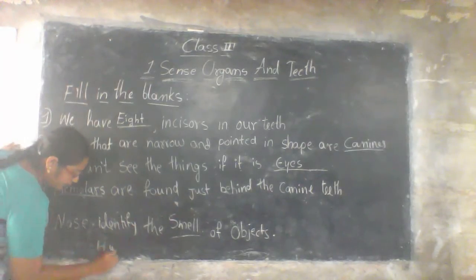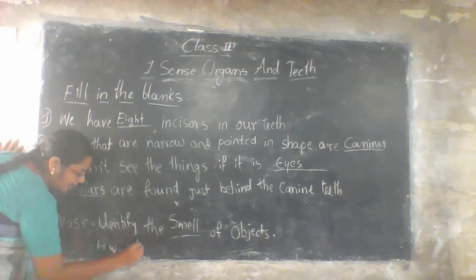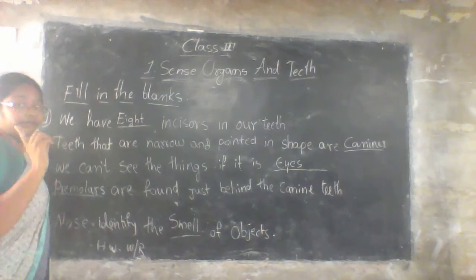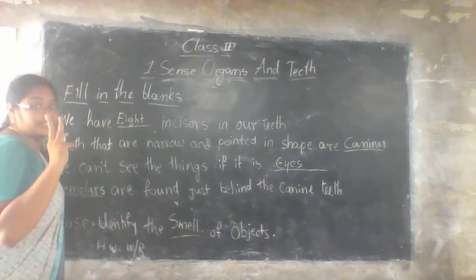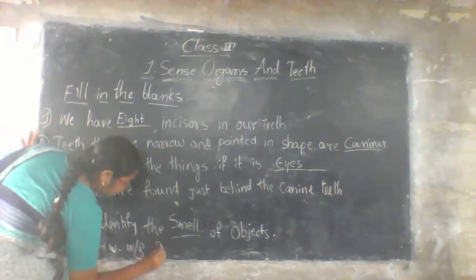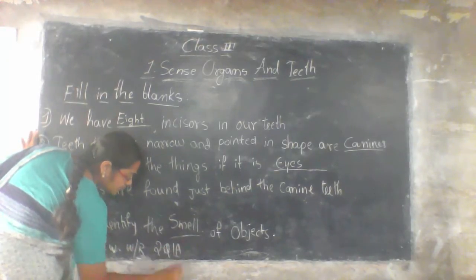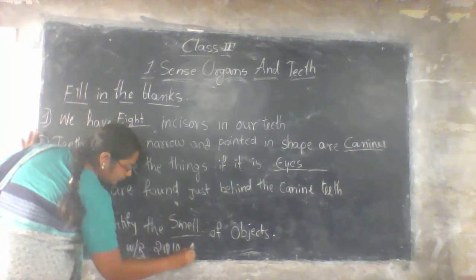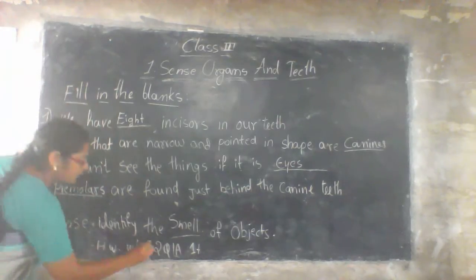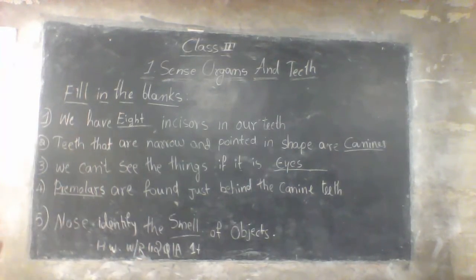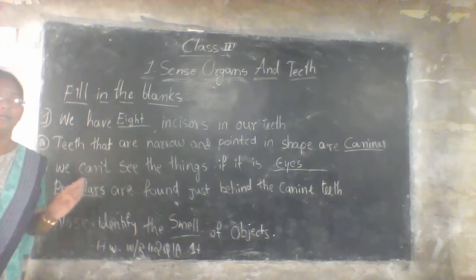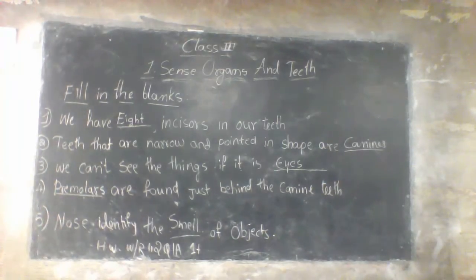For homework, I will give you read and write. Write the first two question and answers — two questions, one time each. We have already written four questions in class. For homework, just write the first two questions. Write neatly. We will continue at the next class.